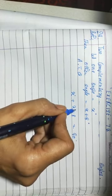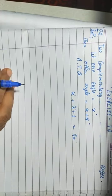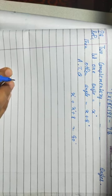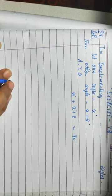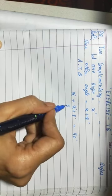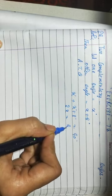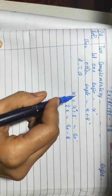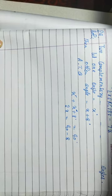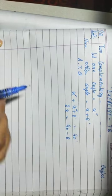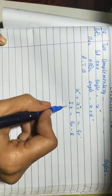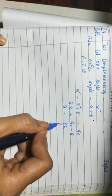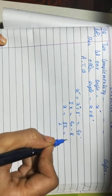Two supplementary angles have a sum of 180 degrees — we will use that in question 30. Now we solve for x: 2x is equal to 90 minus 8. There is no need to put the degree sign with x, only with numerals. Then x is equal to 82 divided by 2, that is 41.